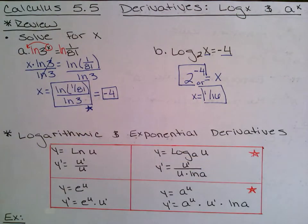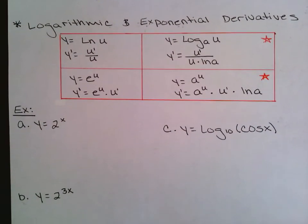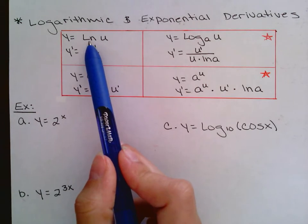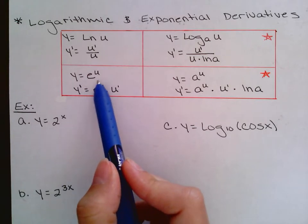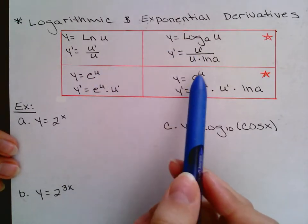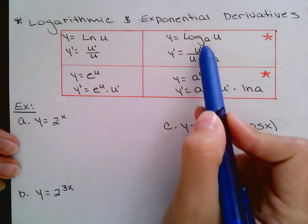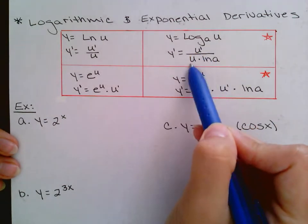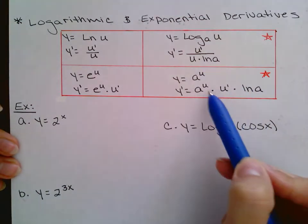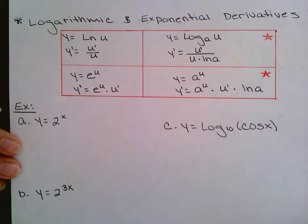Back to the chart of rules we've been building for this chapter. We've already seen a logarithm base e — the natural logarithm — and exponential functions with base e. Now we're going to see both of those rules with different bases: log of any base and an exponential function of any base. The rules stay the same, we just add ln of a. So the log rule is u prime over u times ln of a in the denominator, and the exponential rule is rewrite times derivative of the exponent times ln of the base.